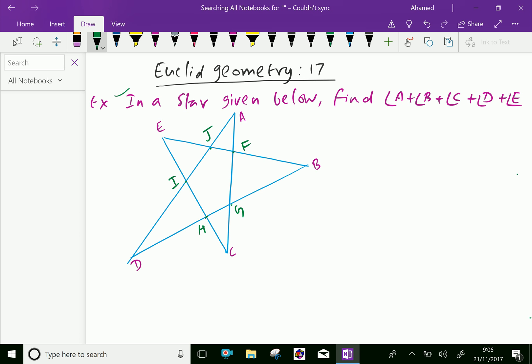Now, in triangle AFJ, we will keep this angle in order also 1, 2, 3, 4, 5. These are interior angles of a pentagon.